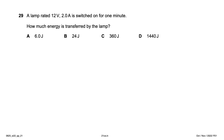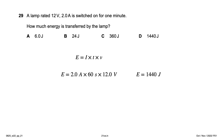A lamp rated 12 V, 2 A is switched on for one minute. How much energy is transferred? Energy = current × voltage × time = 2 A × 12 V × 60 s = 1440 joules — option D. Note: if you forget to convert 1 minute to 60 seconds you would get the wrong answer of 24 joules.